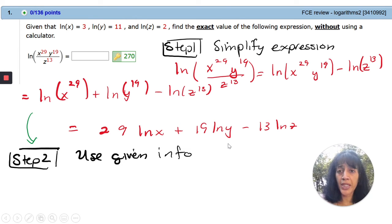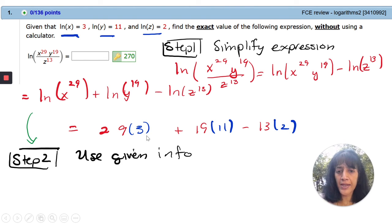Almost done. Again, we're going to use the given information that log of X is 3, log of Y is 11, and log of Z is 2. So if I apply those three different expressions in here, I substitute them in, I get an arithmetic expression, which is 270.